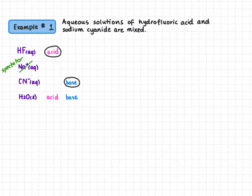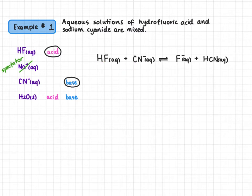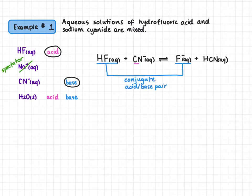Now that we know our strongest acid and strongest base, we react them. Hydrofluoric acid reacts with cyanide. Hydrofluoric acid donates a proton to cyanide, so we form an equilibrium. When hydrofluoric acid loses a proton, it forms its conjugate base, fluoride. When cyanide gains a proton, it forms its conjugate acid, hydrocyanic acid. In this equilibrium we have two conjugate acid-base pairs: hydrofluoric acid and fluoride, and cyanide and hydrocyanic acid — each pair differs by one hydrogen.